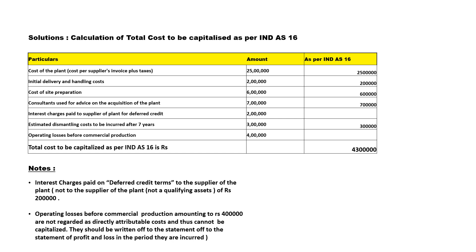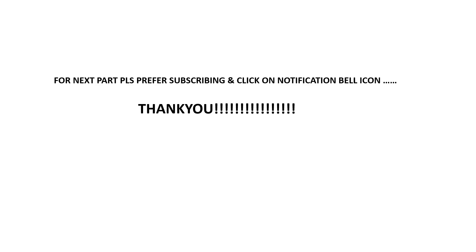When you add all the included items, the total cost to be capitalized as per Indian Accounting Standard 16 is rupees 43 lakhs. That is your answer to Problem Number 8. In the next part, we will solve Problem Number 9. Please subscribe and click on the notification bell icon. Thank you.